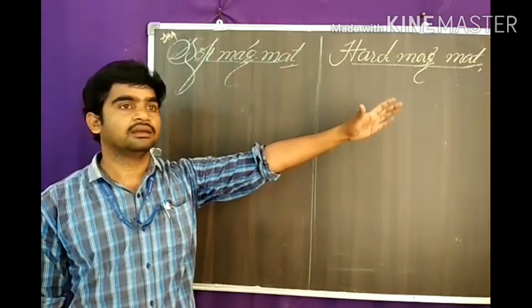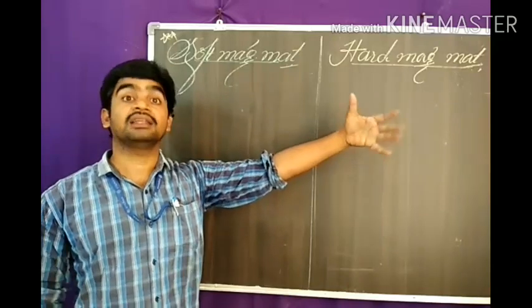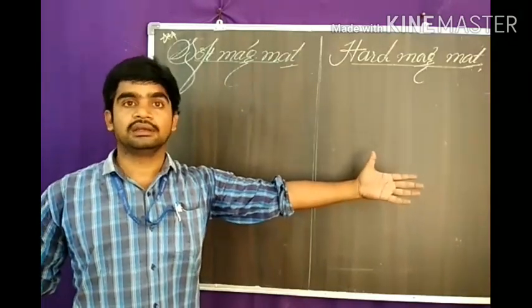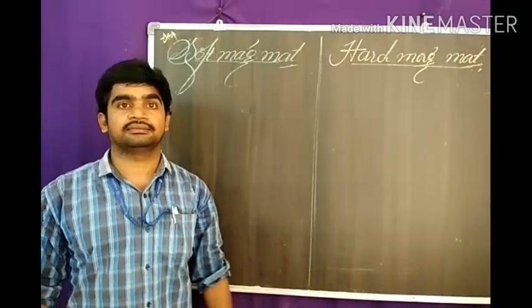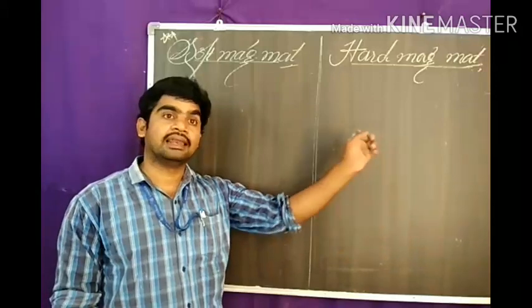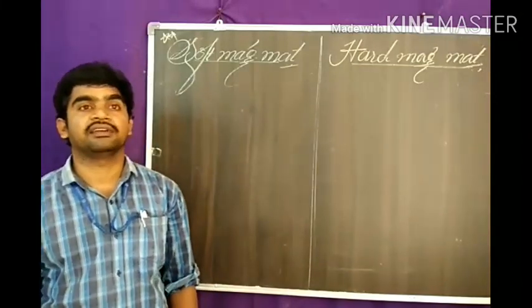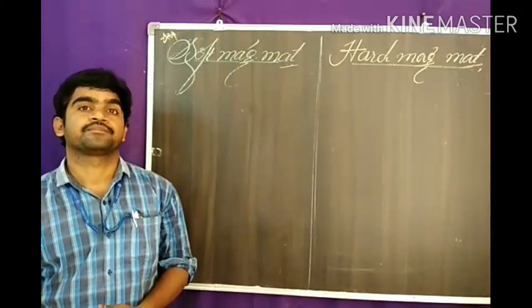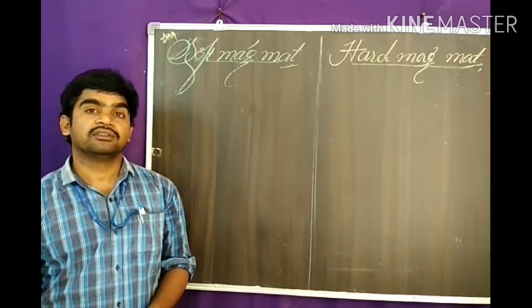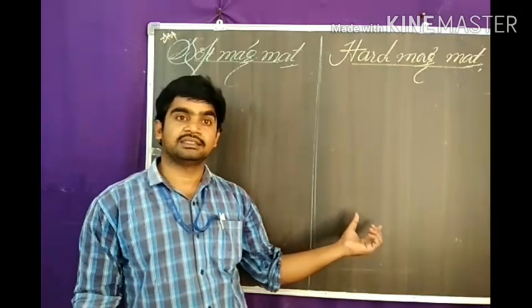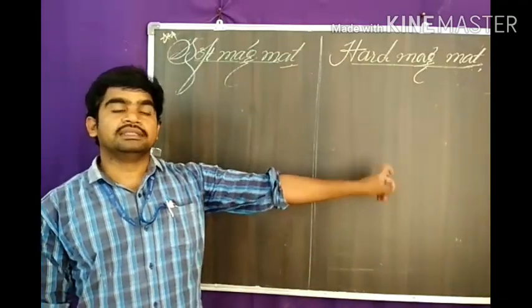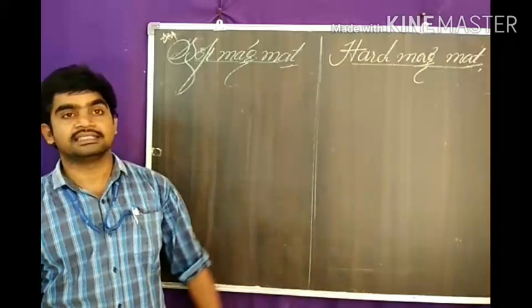Hard magnetic materials are not easily demagnetized, meaning hysteresis loss is there. The permeability and susceptibility values are less. Coercivity and retentivity values are high. Domain wall movement is different. Eddy current loss is low because of high resistivity.